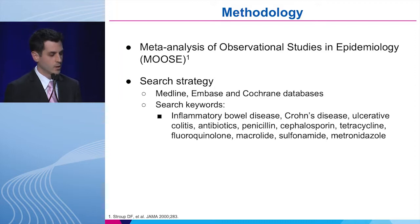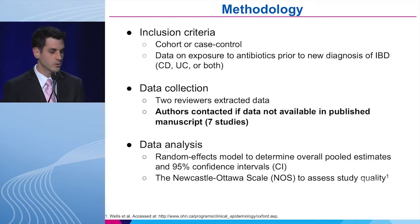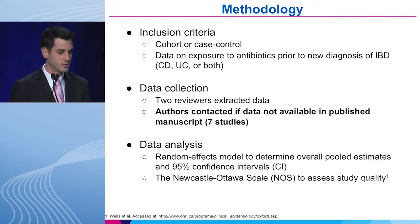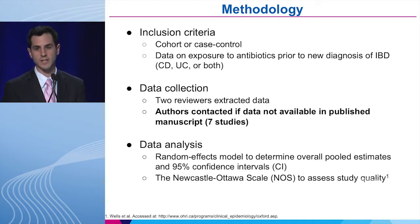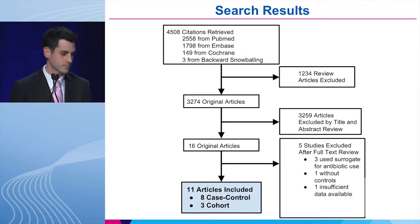We followed the MOOSE guidelines in designing our study. We searched major databases with the keywords listed here. Our inclusion criteria were observational studies with data about antibiotic exposure prior to a new diagnosis of IBD. If data about outcomes of interest was not present in the published manuscript, we contacted authors directly. Ultimately, we performed a random effects model to determine overall pooled estimates and used the Newcastle-Ottawa scale to assess study quality, which has a maximum score of nine.